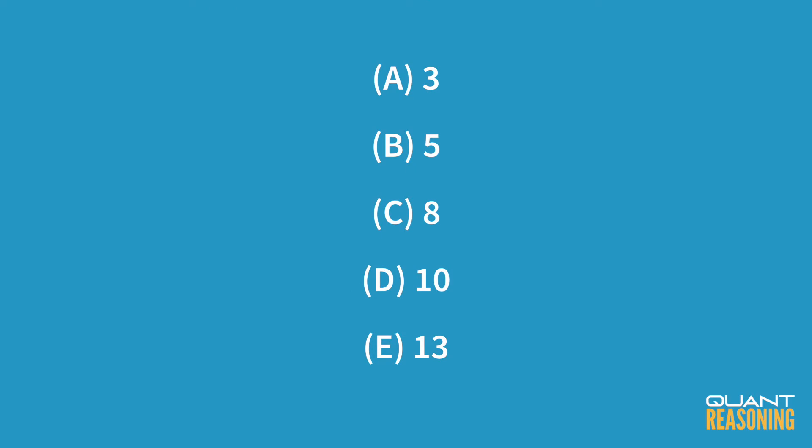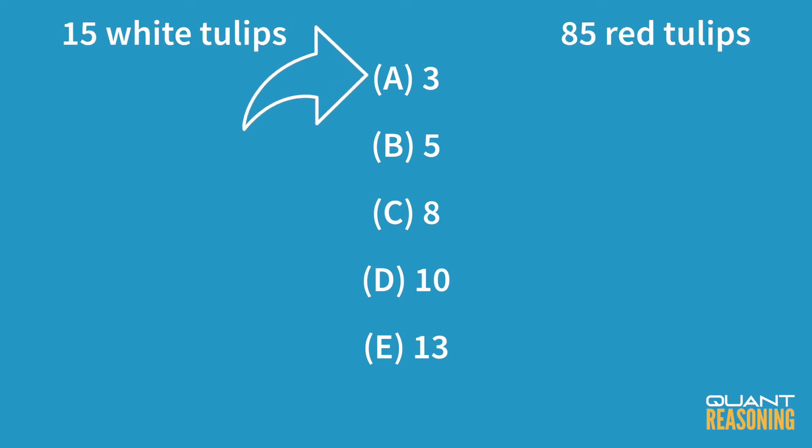But hang on a second — take a look at these answer choices. Is it possible that we have three bouquets? How many white tulips would be in there? Five each, I guess. How many red tulips would be in there? Is 85 divisible by 3? The easiest way to check that is to add the digits of 85. 8 plus 5 is 13, and 13 is not divisible by 3, therefore 85 is not divisible by 3.